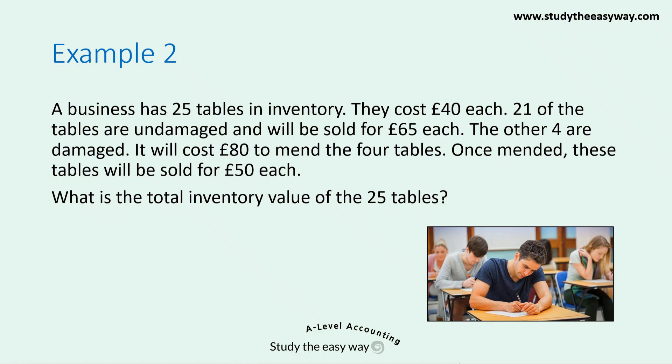Let's have a look at example two. A business has 25 tables in inventory; they cost £40 each. 21 of these tables are undamaged and will be sold for £65 each, and the other four are damaged. It will cost £80 in total to mend the four tables, and once mended they will be sold for £50 each. The question asks: what is the total inventory value of the 25 tables? When you have a question like this, it's really important to look at the undamaged tables and the damaged tables separately — each will have their own inventory value calculated, and then we'll calculate the total inventory value by adding these together.